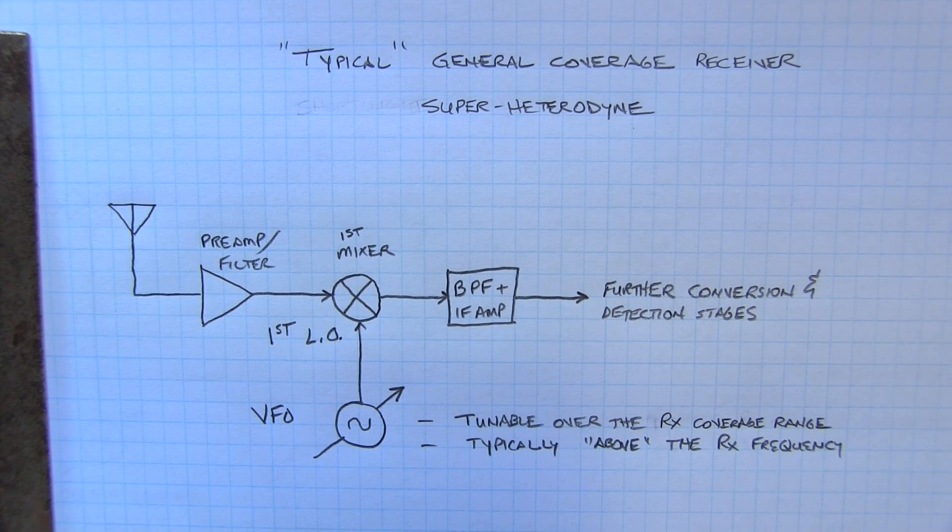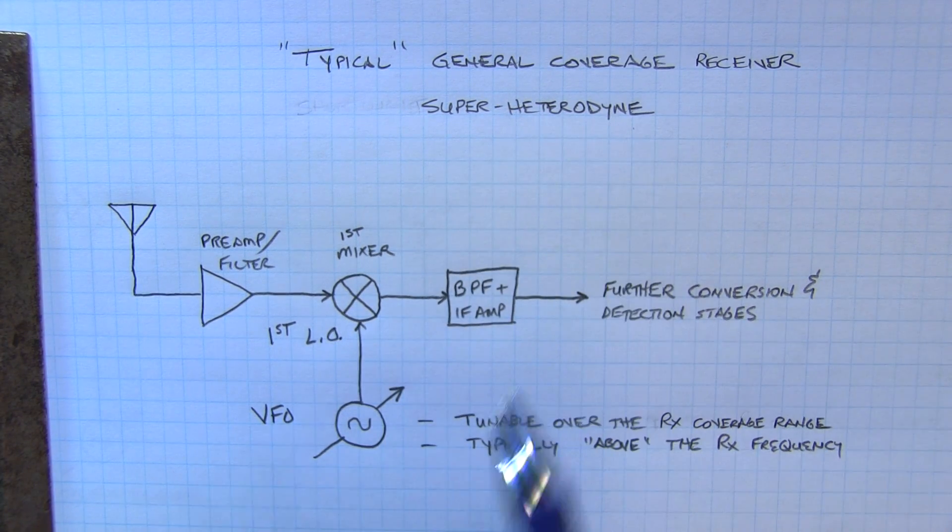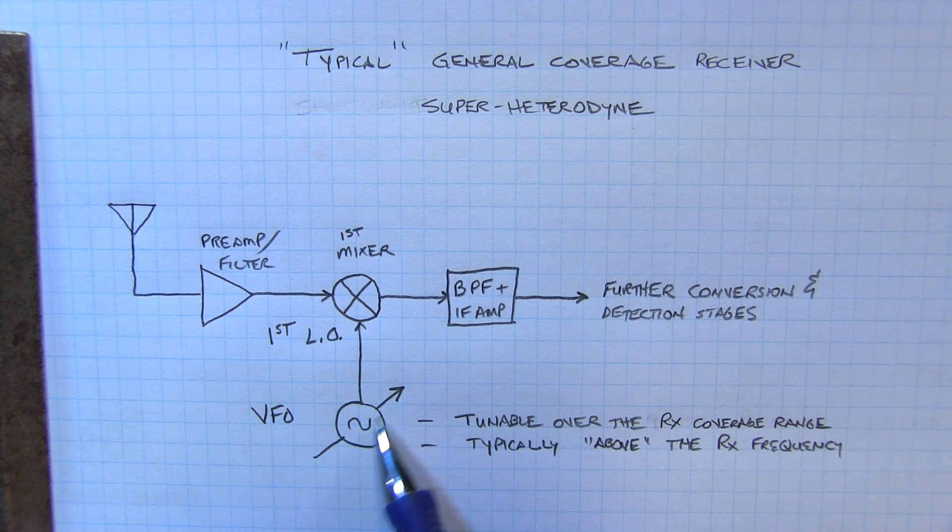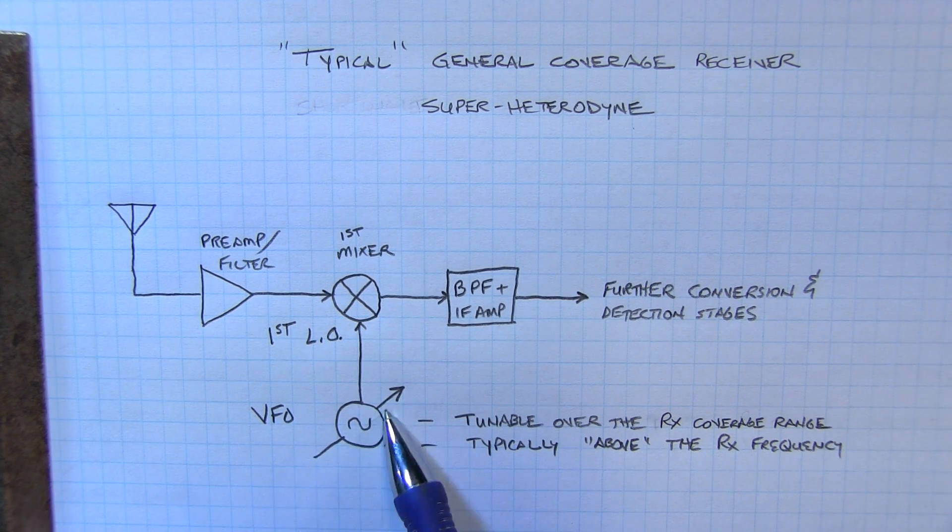The frequency stability of a typical super heterodyne style general coverage receiver is dominated by the stability of the first local oscillator, or VFO.